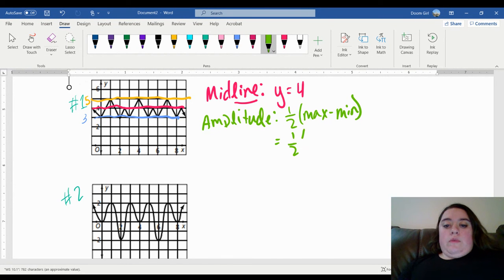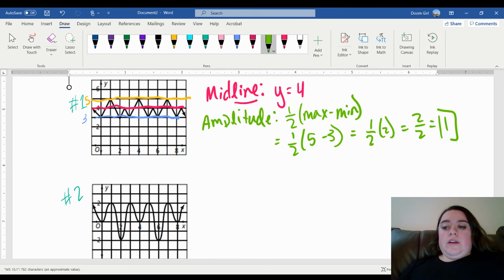Okay, we know our maximum, that's five. We know our minimum, that's three. So we end up with one half of five minus three is two. So one half times two, well, that just becomes two over two, which is one. So my amplitude for graph number one would be one.